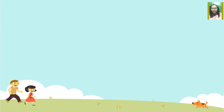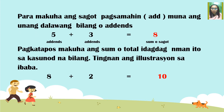Para mas maintindihan natin kung paano nakuha ang sagot sa sitwasyon, ay ating tingnan ang ilustrasyon. Una, ay pinagsama ang unang dalawang bilang or addends. Pagkatapos, makuha ang sum o total nito, ay idagdag naman ito sa kasunod na bilang.